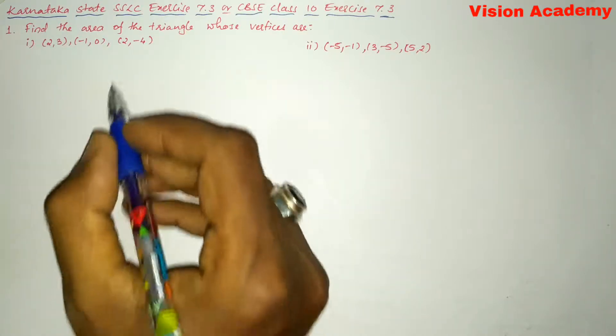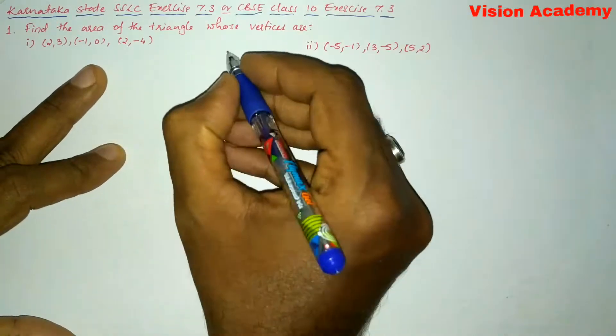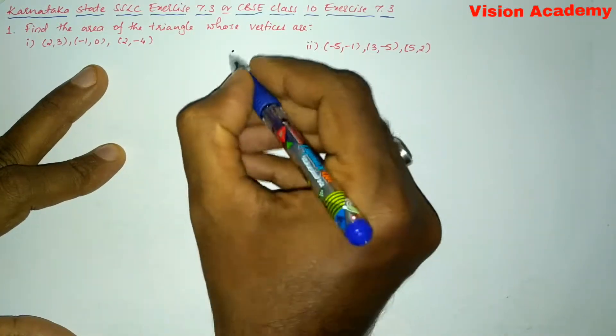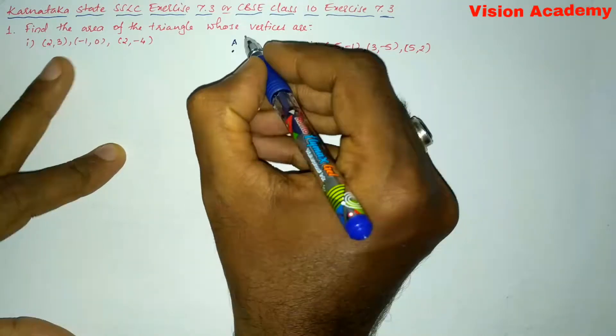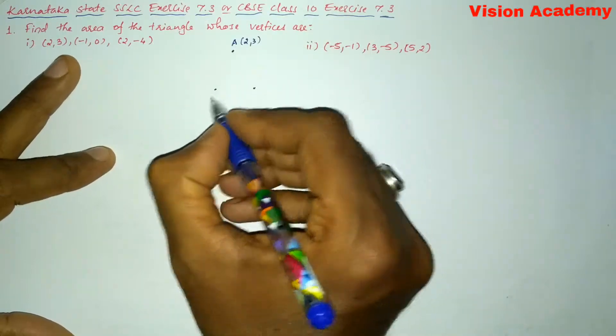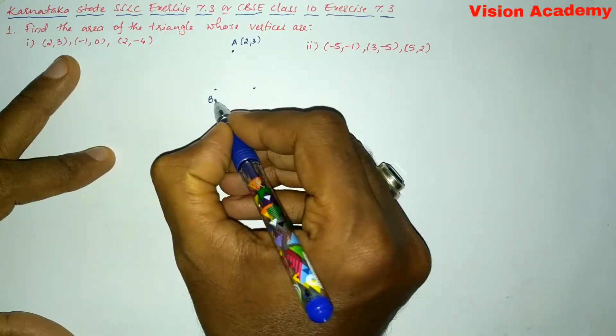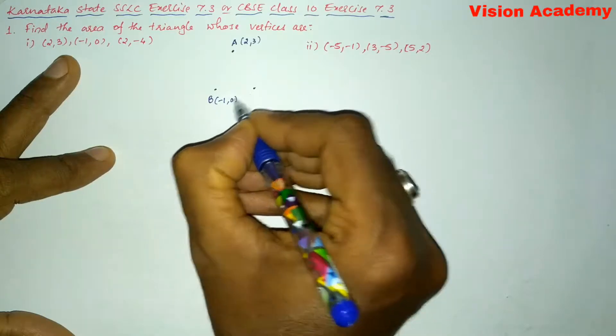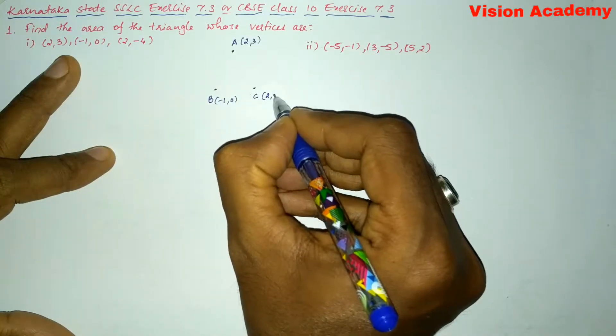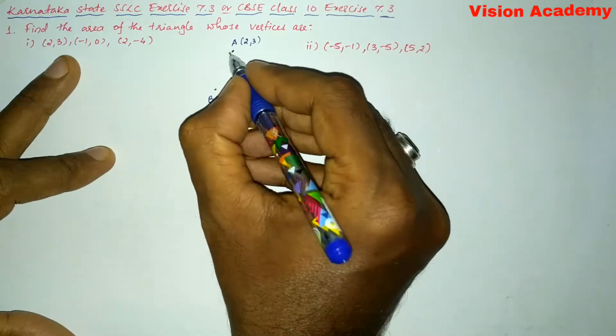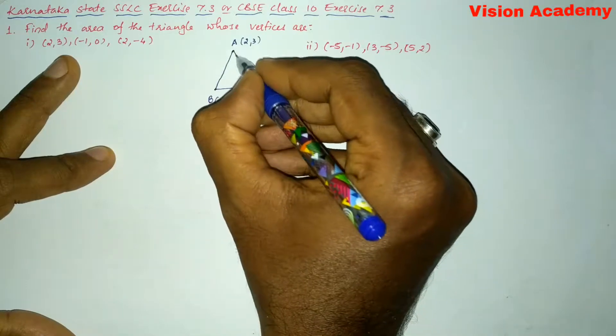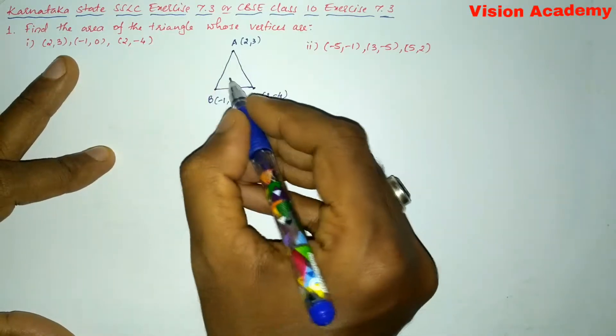Here they have given the vertices of the triangle. So let us consider this as A whose coordinates are (2,3), and let us say this point as B with coordinates (-1,0), and let us say this point as C with coordinates (2,-4). So this forms a triangle. Now we need to find the area of this triangle.